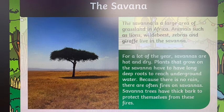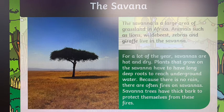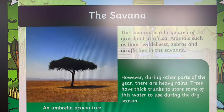For a lot of the year, savannahs are hot and dry, and plants that grow there have to have long, deep roots to reach underground water. Because there is no rain, there are often fires, so savannah trees have thick bark to protect themselves. However, during other parts of the year there are heavy rains, and trees have thick trunks to store some of this water to use during the dry season.